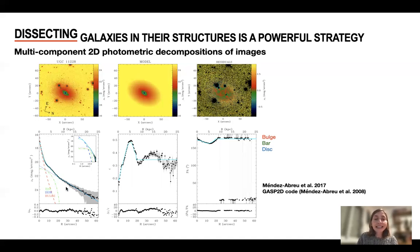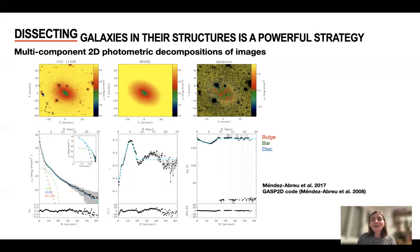The best fit is the cyan line. And in this case, we have modeled this galaxy light with a bulge in red, a stellar bar in green, and a disc in blue. Photometric decomposition is a very powerful analysis tool, and this way we can study the photometric properties.